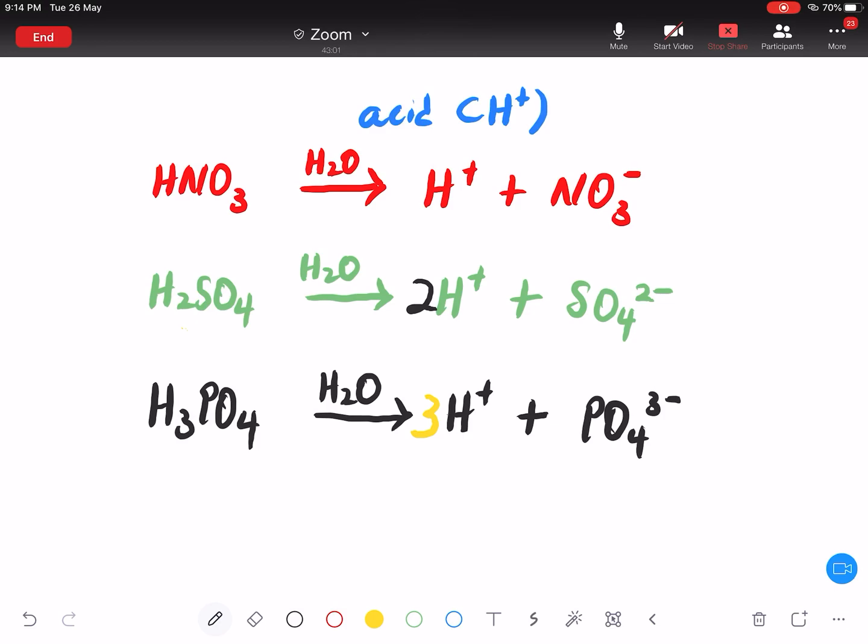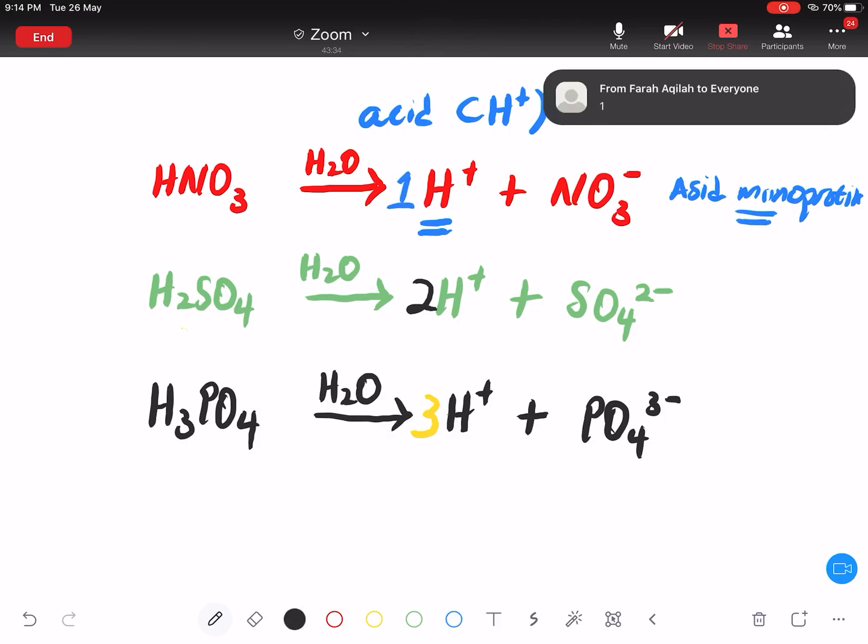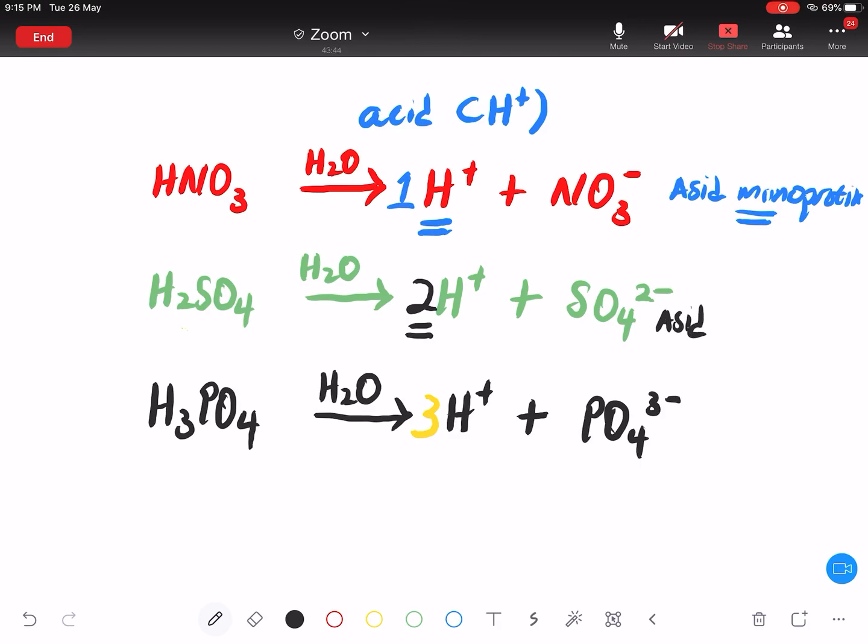Yeah. Okay. Okay. Dengar sini, eh. Okay. Korang tengok sini. Dekat sini kan ada satu hydrogen. Betul? Dia ada satu hydrogen. Maka, ia dipanggil sebagai Acid monoprotic. Dia dipanggil sebagai Acid monoprotic. Sebab apa mono? Mono menunjuk kepada satu. And also, dua. Dia ada dua. Kalau dua, kita panggil apa? Acid apa? Kalau ada dua. Dia dipanggil sebagai diprotic. Very good. Diprotic.